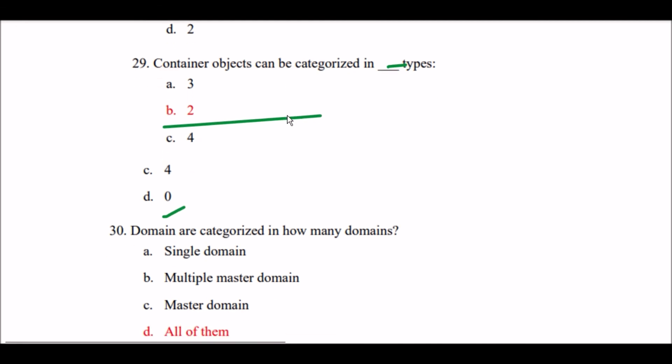Next question: Domains are categorized in how many domains? Option A: single domain. Option B: multiple master domain. Option C: master domain. Option D: all of them. The right answer is Option D — all of them.